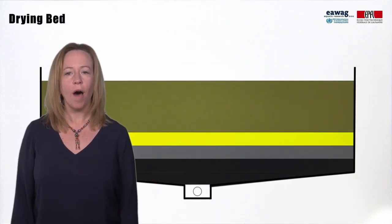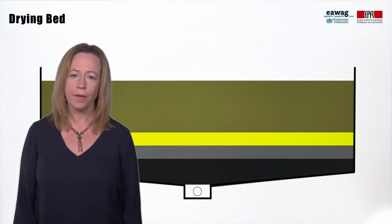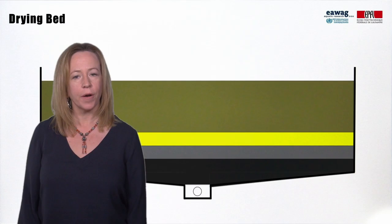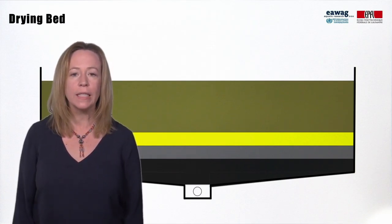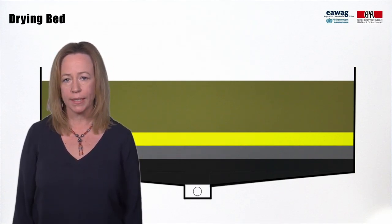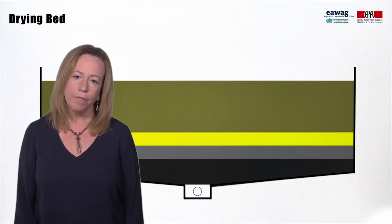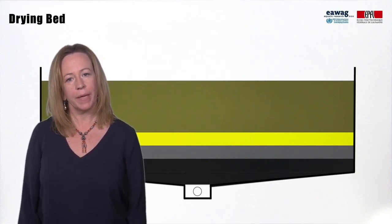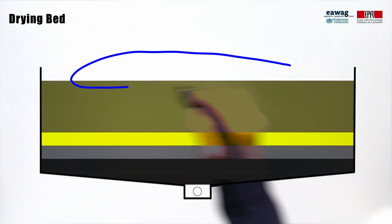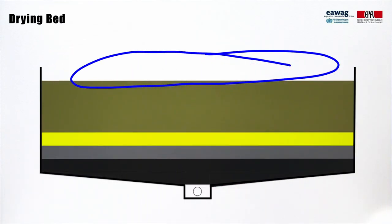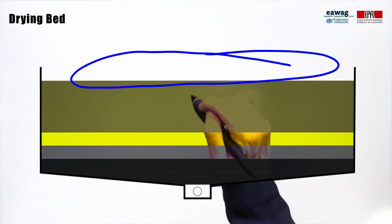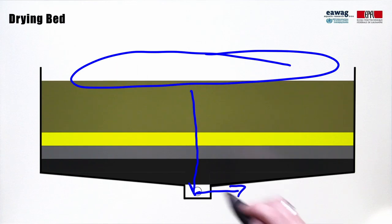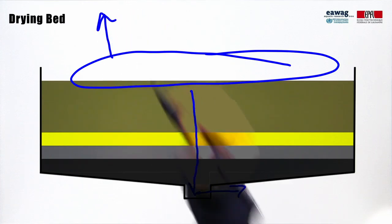Filtration is also a commonly applied mechanism for dewatering. Many different types of filtration media are used for water, wastewater, and treated sludge or biosolids processing. The most common for the treatment of fecal sludge are drying beds and planted drying beds. Drying beds use sand and gravel filter media to trap solids on the surface of the filter bed, while the liquid percolates through and is collected in a drain or evaporates.